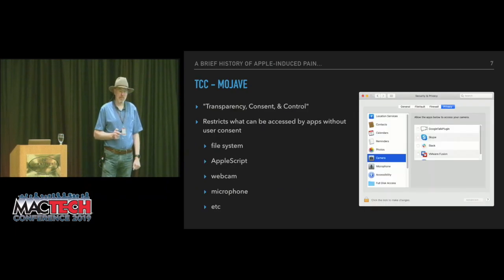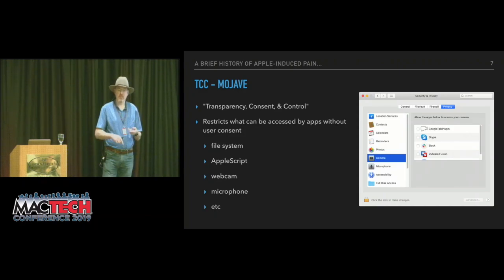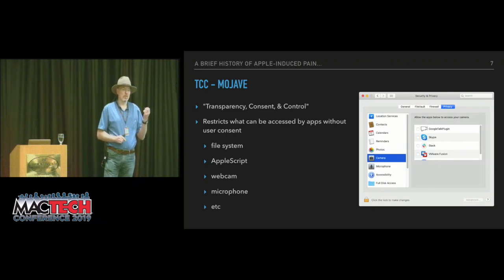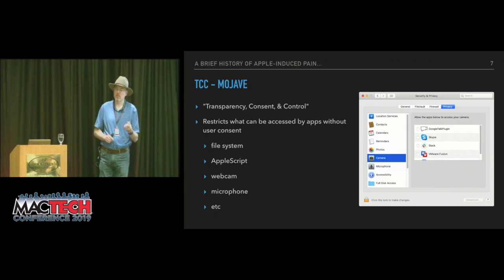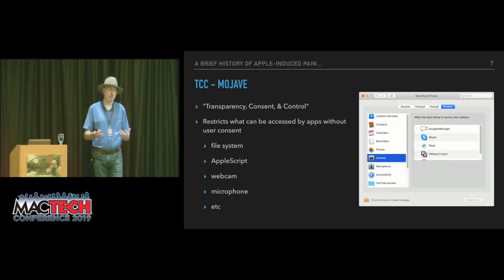Moving to Mojave, we've got TCC — Transparency, Consent, and Control — which controls access to certain parts of the file system and access to AppleScript. If you want to use AppleScript to get the path of every login item, that doesn't work automatically anymore. You're going to trigger a user prompt asking whether the script can control System Events. So it makes it harder for us to get the information we need.